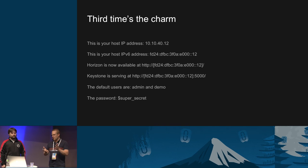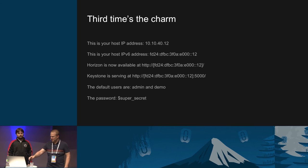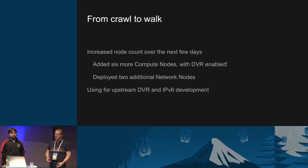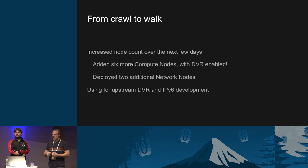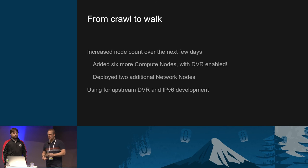Finally, the third time — or maybe it wasn't the third time, maybe the fourth or fifth — it actually worked. You can see we have an IPv6 address for the host. Horizon is showing that it's available over an IPv6 address, as is Keystone. From there, we knew we could crawl, so we decided to walk and started adding nodes. Over the next few days that week, we added six more compute nodes, all with DVR enabled, and deployed two additional network nodes. One thing you should know if you haven't done a DevStack multi-node install: the compute nodes require both the L3 agent and the metadata agent to operate properly. If you don't enable those in your local.conf, your VMs will boot and nothing will work — either DHCP will fail or metadata will fail.